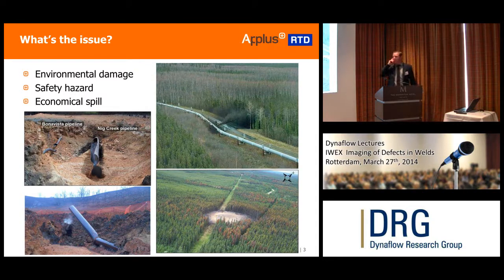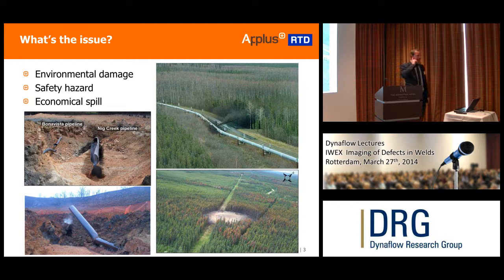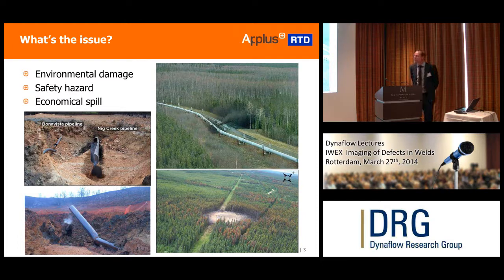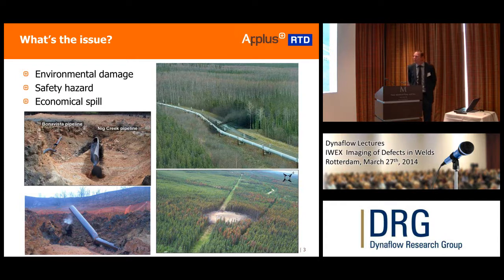So what's the issue? We saw some images of exploding tanks, planes. These are more related to pipeline issues. The environmental damage, safety hazards, and economical spills are straightforward. These examples aren't hard to find — if you Google on the internet, these images pop up. They do occur.